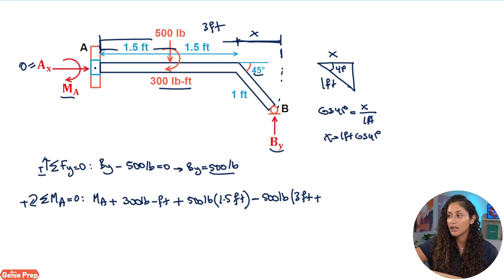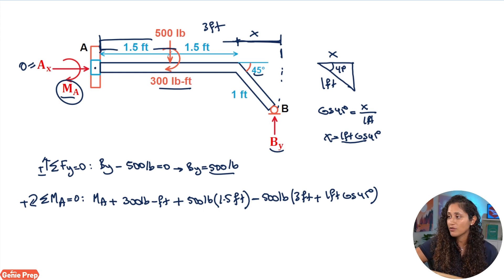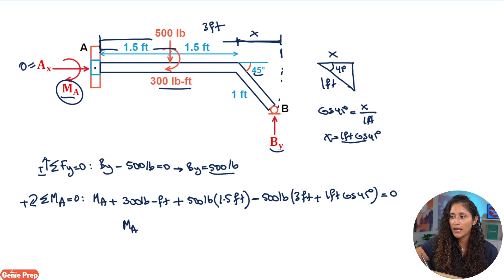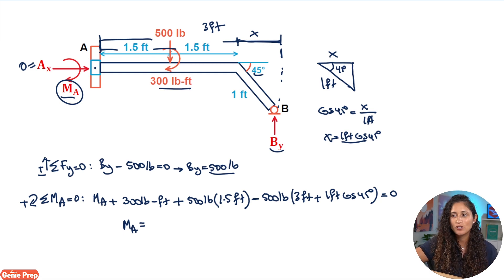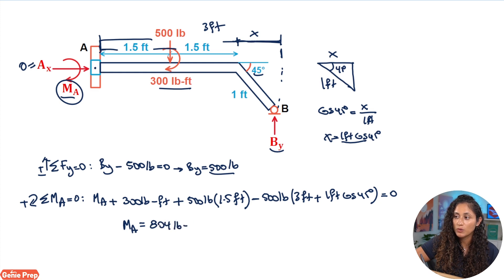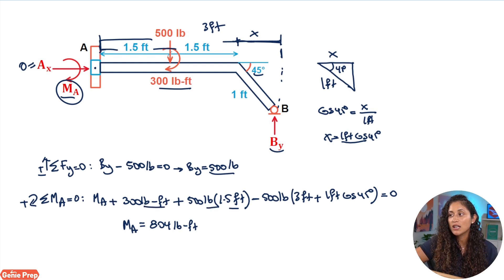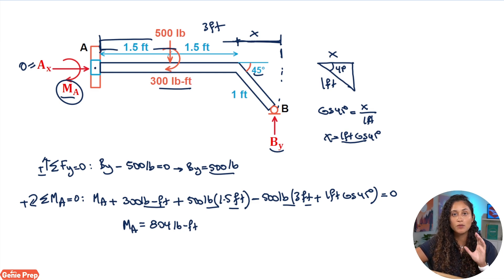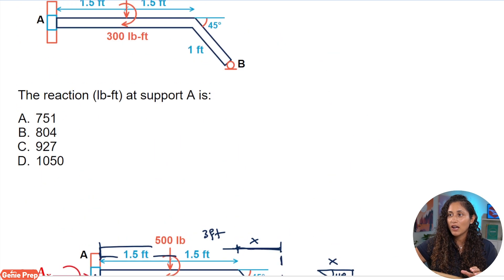Make sure you understand this trigonometry — it's very important for statics. Substituting x = 1·cos(45°) into the moment equation and setting everything equal to zero, we rearrange and solve for the moment at A. Plugging the numbers into your calculator, you get 804 lb·ft. The units are pound-feet, which is the unit for moment. Make sure every term in your equation has consistent units.